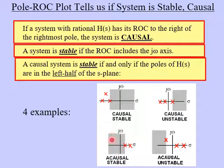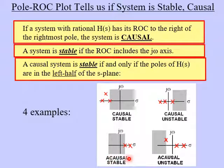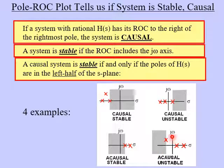In the third example, we have two poles, and this time the ROC is to the left of the leftmost pole. This means the system is not causal — it is acausal. However, the ROC does include the j-omega axis, which means it is stable. In the last example, we have three poles plotted, and the ROC is to the left of the leftmost pole — that means it's acausal. And the j-omega axis is not inside the ROC, which means it's unstable.